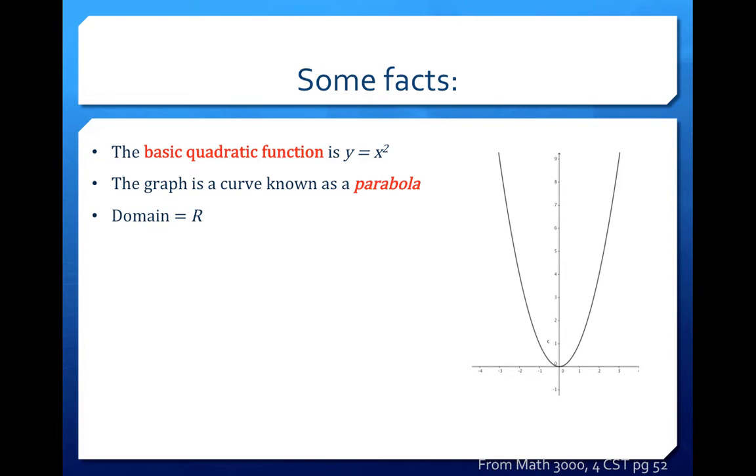The domain of this parabola, if we go from left to right, we're going from negative infinity all the way to positive infinity. So the domain can be known as all real numbers.